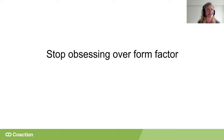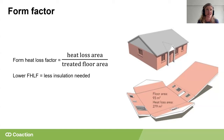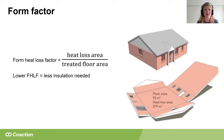Stop obsessing over form factor. We get an awful lot of this on passive house projects. For those who haven't come across it before, it's a metric to give us an understanding of how efficient a design is. The heat loss of a building is a function of its surface area — walls, roof, and floor. We express this as that surface area divided by the treated floor area: the heat loss area is what we pay for, the treated floor area is what we want.